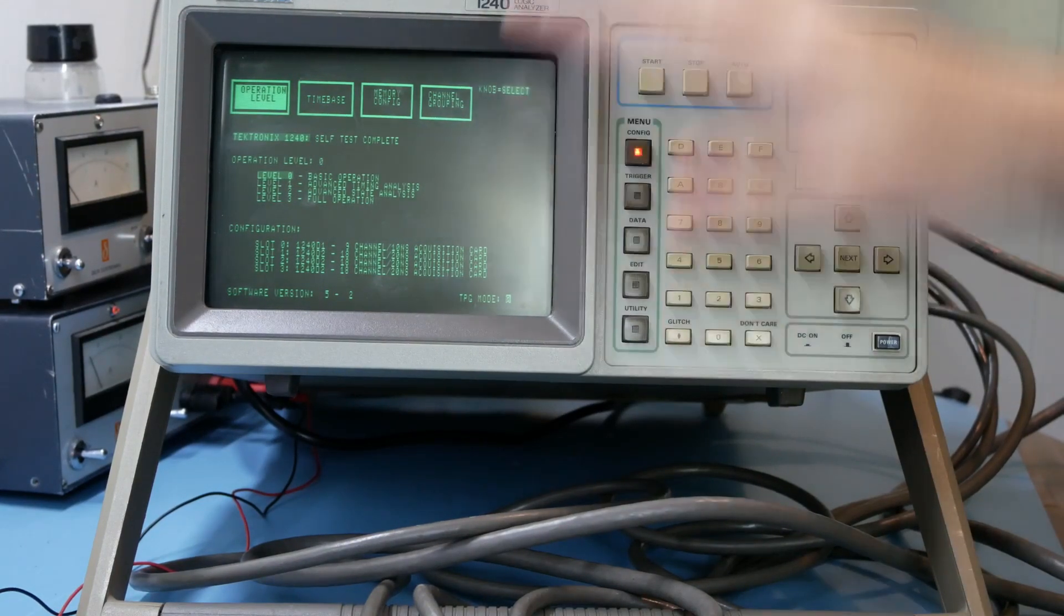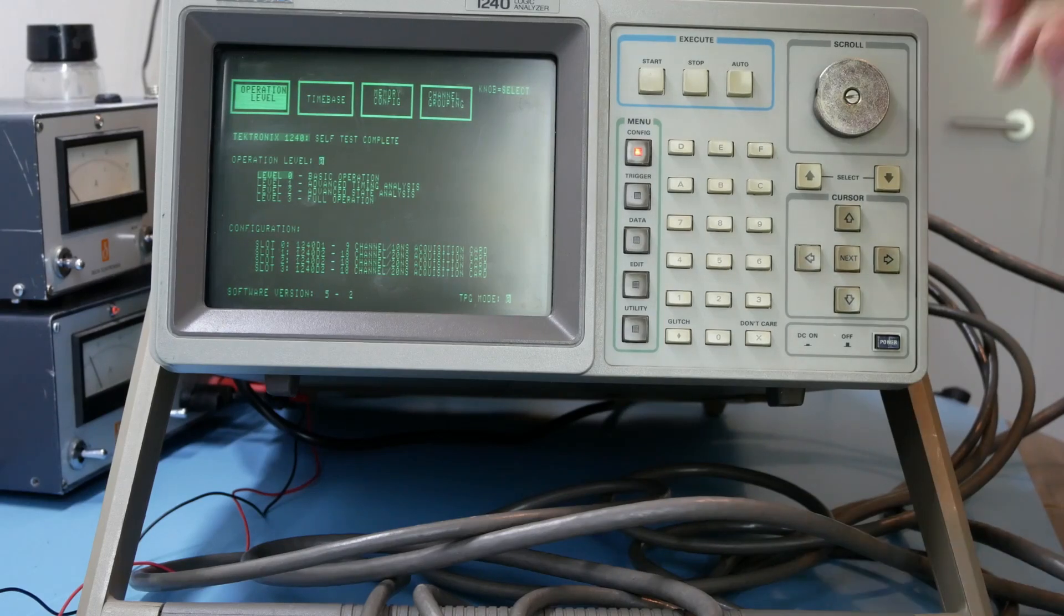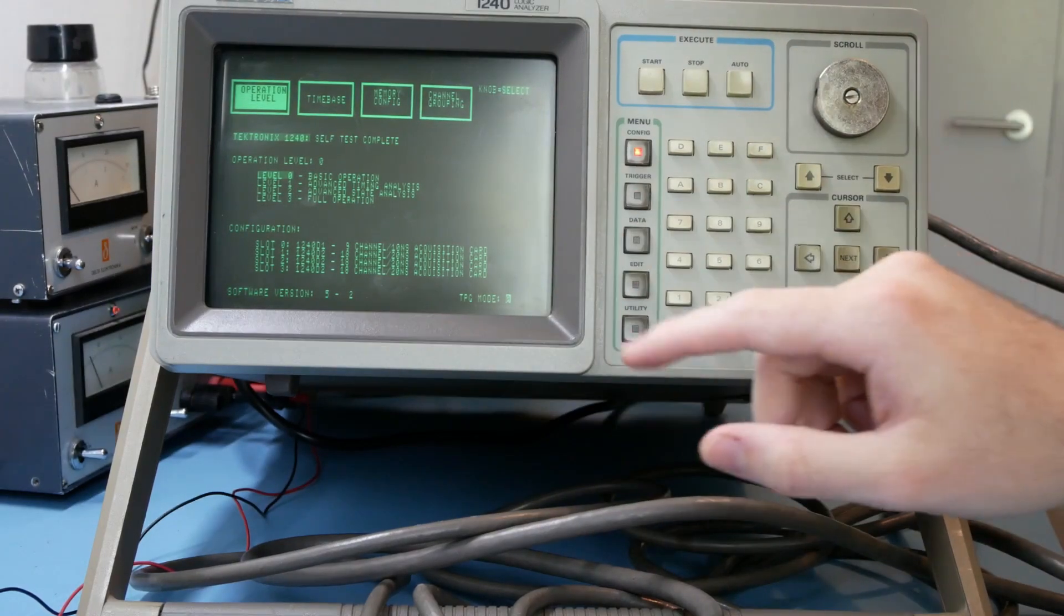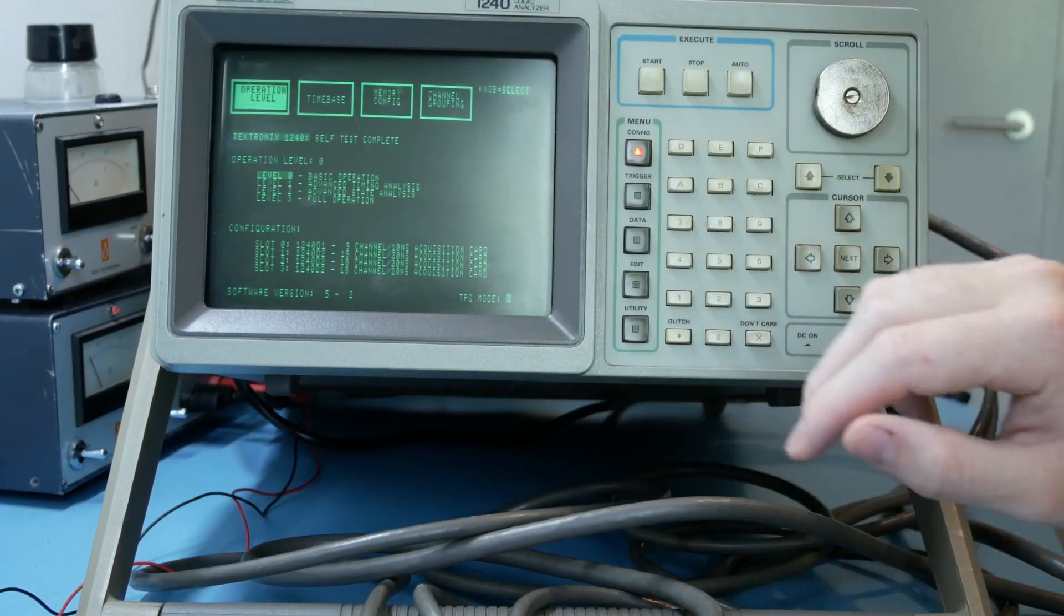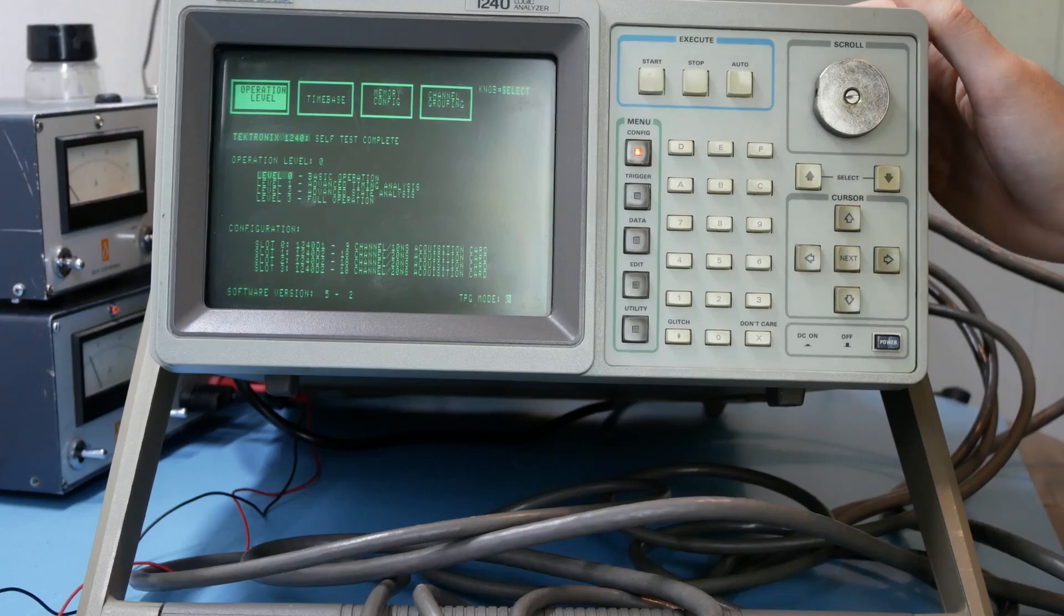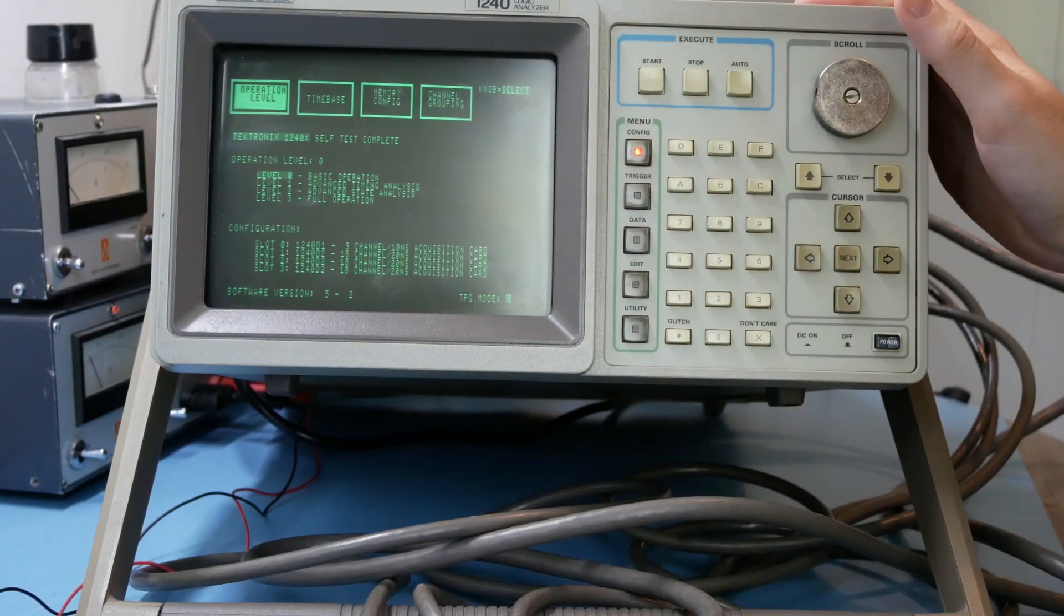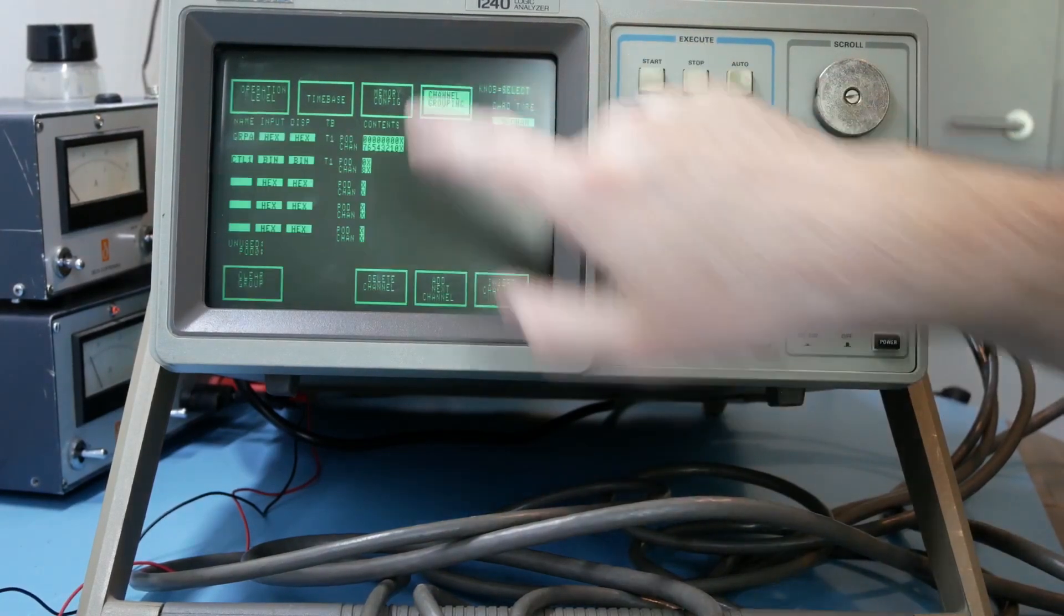Now this particular unit has 63 channels. There are three 18 channel input boards and one 9 channel input board. If you'd have one with all four 18 channel boards you would have 73 channels in total, the maximum of this machine. But hey, 63 channels is not bad at all.